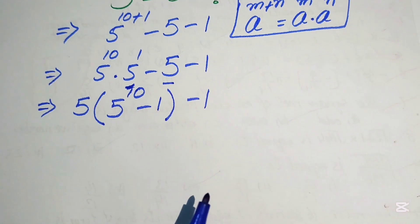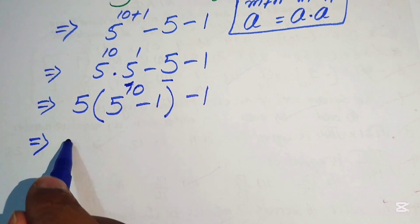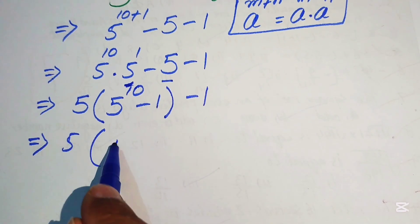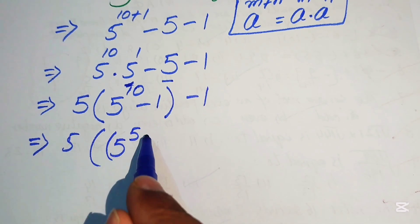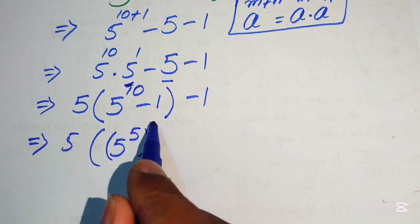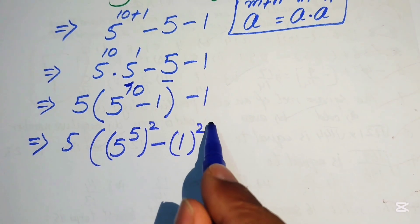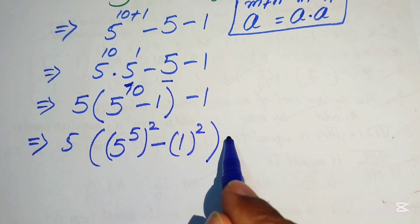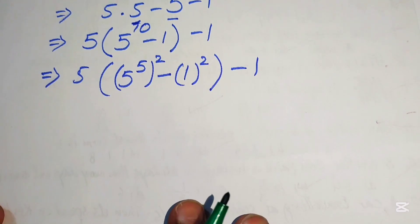After factoring, we have 5 to the power of 10 minus 1. We rewrite 5 to the power of 10 as the whole square of 5 to the power of 5, and we write 1 as 1 squared. Now we can apply a difference of squares formula.